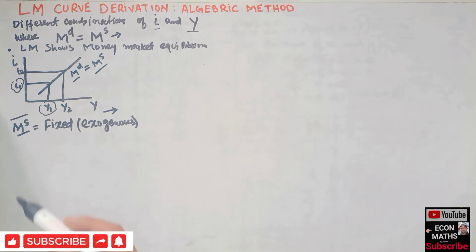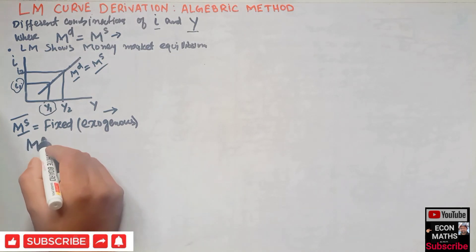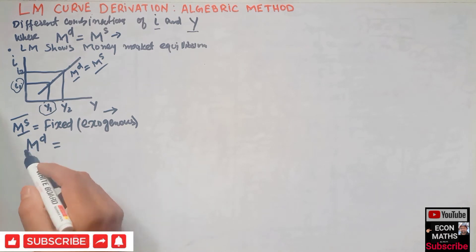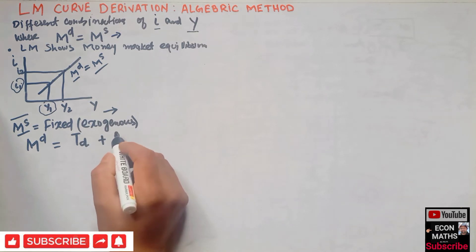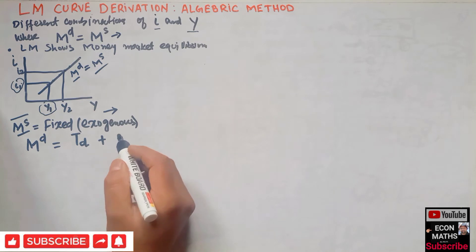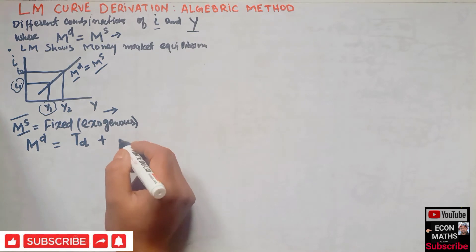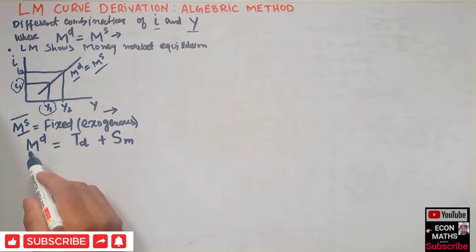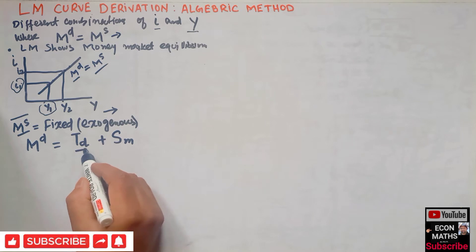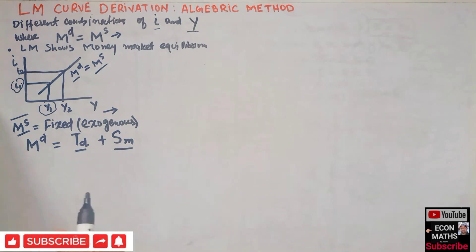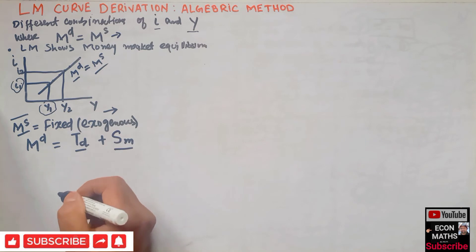We assume money supply is fixed. Now, demand for money has two components: the first is transactionary demand for money, and the second is speculative demand for money. I will elaborate on each of these two components of money demand.